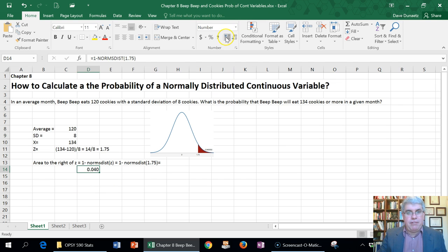So actually, we can give it another one, change that into percentage. And four percent, give it another 4.01 percent. So that's the answer. There's a 4.01 percent chance that Beep Beep will eat 134 cookies or more.